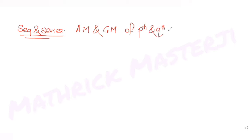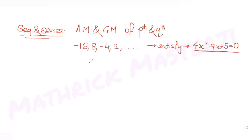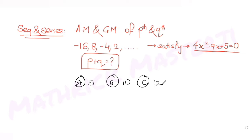Today's question is from the topic of sequences and series. The question tells us: if the arithmetic mean and the geometric mean of the pth and qth terms of the sequence -16, 8, -4, 2 satisfy the equation 4x² - 9x + 5 = 0, then find the value of p + q. The answer choices given are 5, 10, 12, and 16.